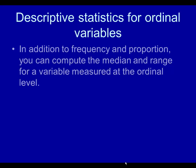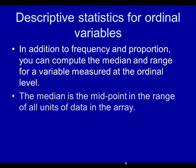For ordinal variables, you can, in addition to frequency and proportion, you can compute the median and the range for a variable measured at the ordinal level. The median is the midpoint. The range is the minimum possible, the minimum score you've received and the highest. The median is the midpoint in all the units of data. Let's just look at an example.